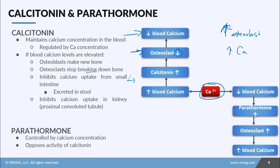There's also another mechanism: any calcium taken in from food is actually excreted in the stool under calcitonin control. Also, calcium uptake in the kidneys at the proximal convoluted tubule increases, and that calcium is kicked out via urine. So calcitonin works to reduce blood calcium through multiple pathways.